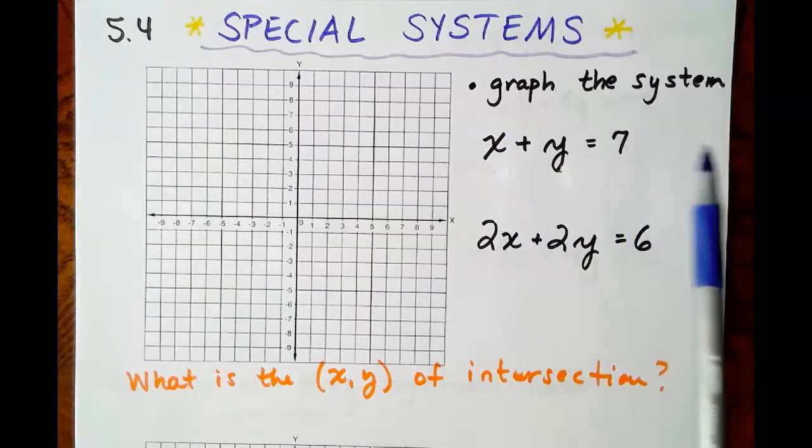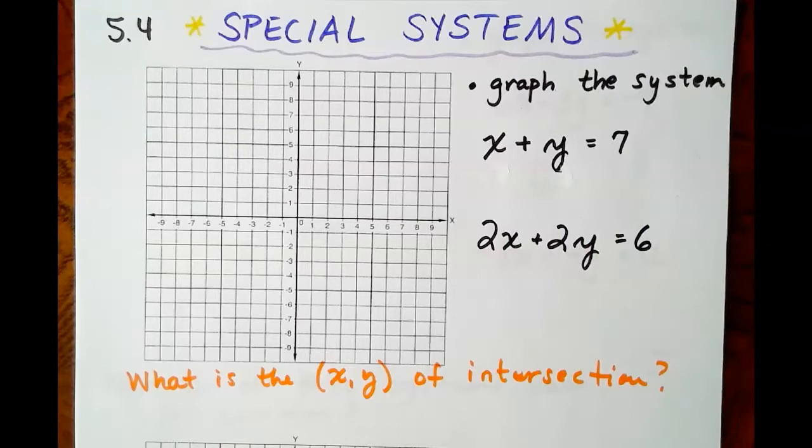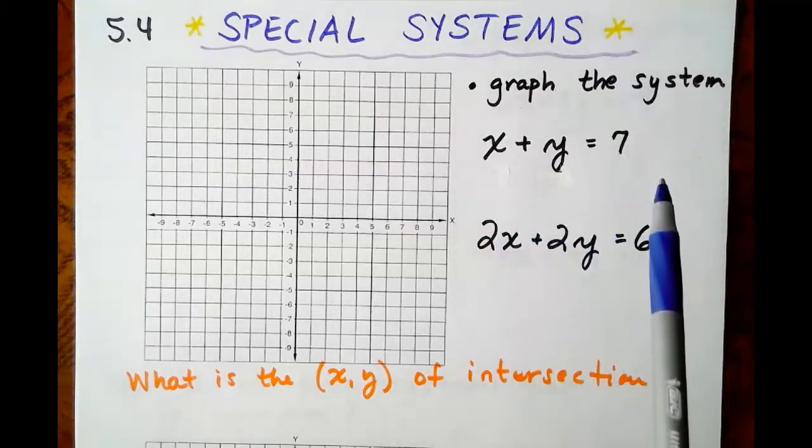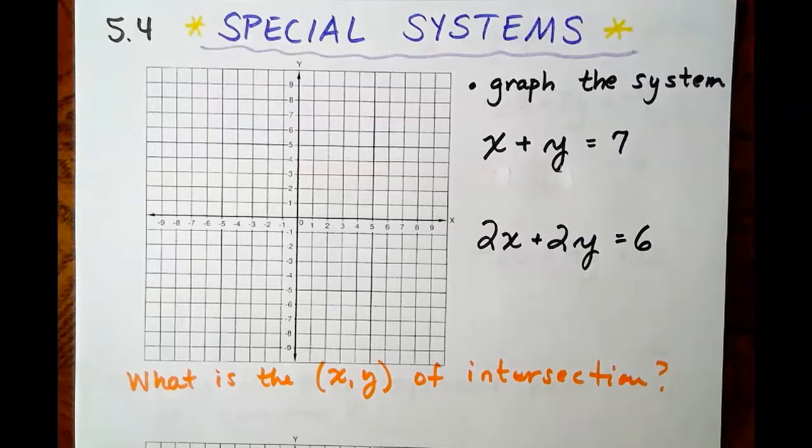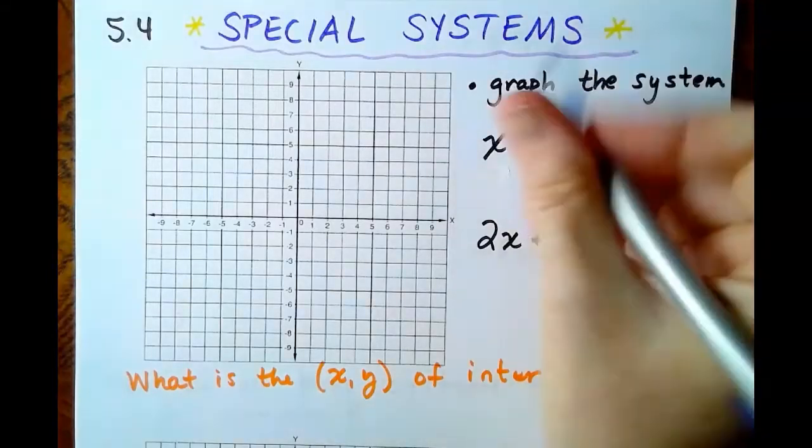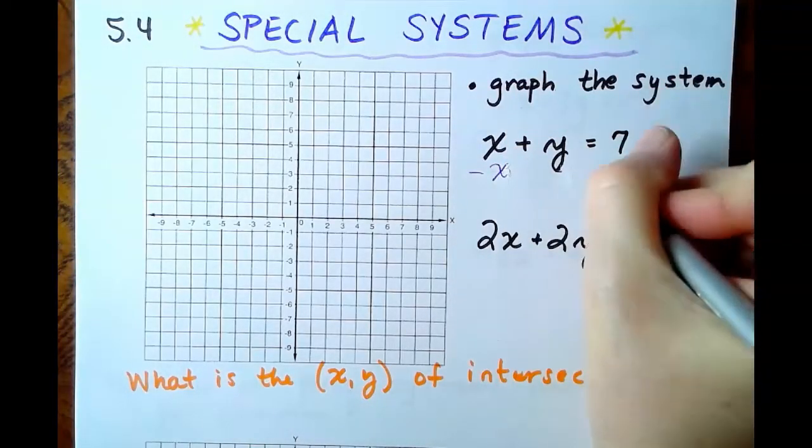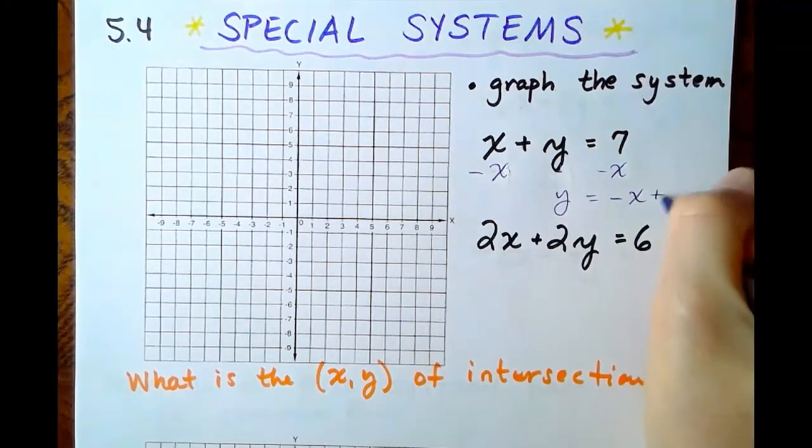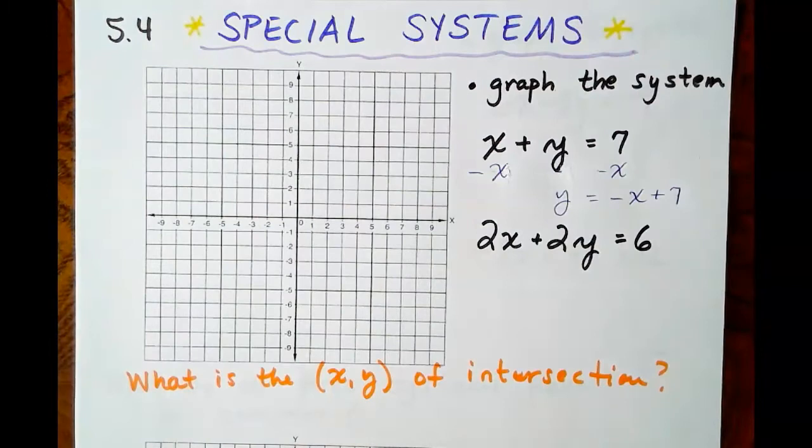We're going to solve this one by graphing. Remember, the solution to a system is the points where the two lines intersect. So if we have x plus y equals 7, we are going to start by solving for y. Minus x, minus x, y equals negative x plus 7.